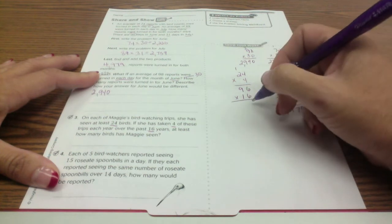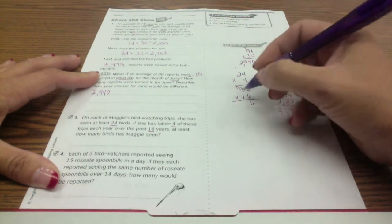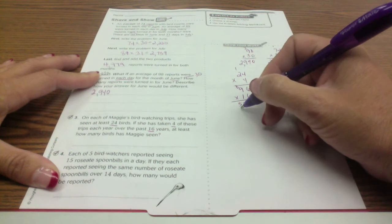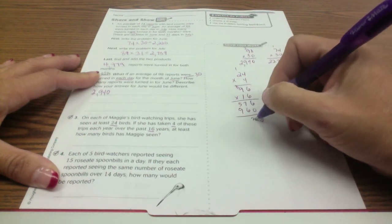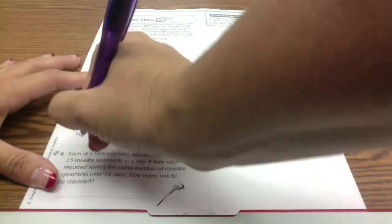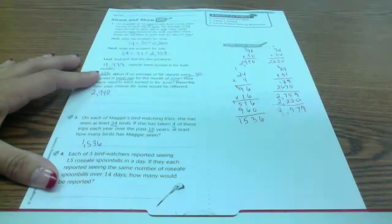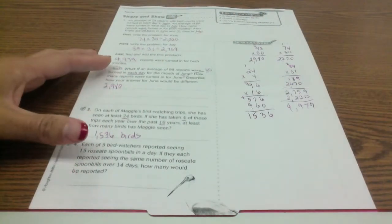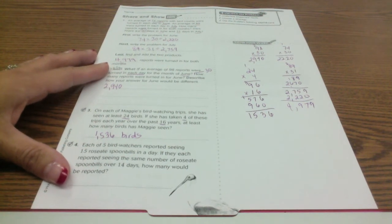6 times 6 is 36, 6 times 9 is 54 plus 3 more is 57, and then 10 times 96 is 960. So 1536. At least she has seen at least 1536 birds.